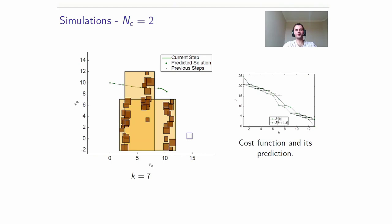This is reflected in the graph right-hand side, where the prediction of the cost at k equal to 7 is not equal to the actual cost because of this reduction. The maneuver ends at k equal to 13.